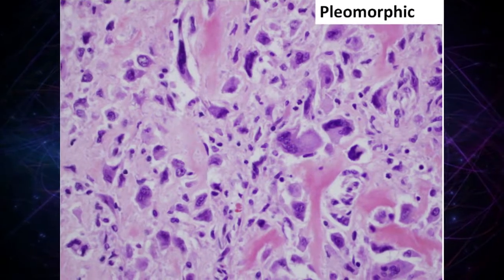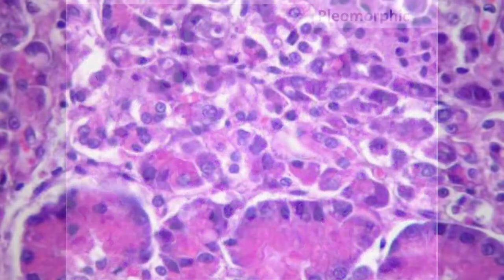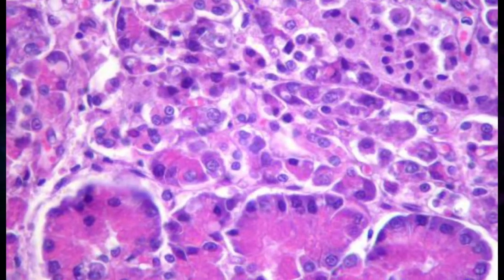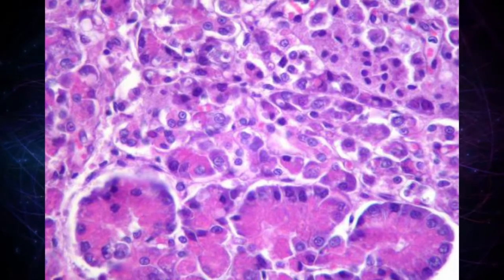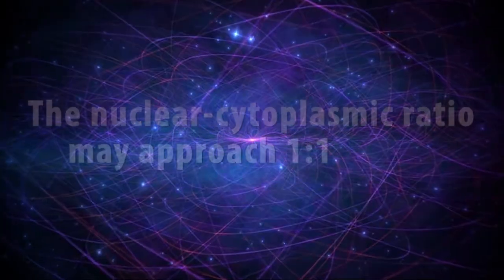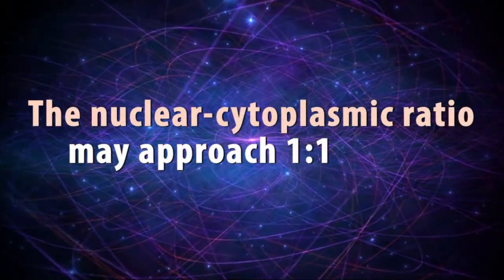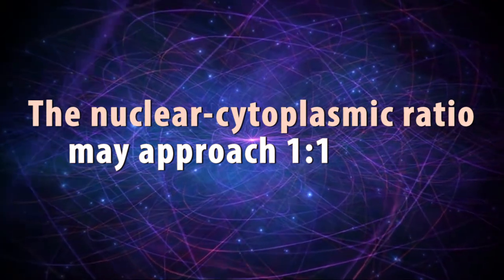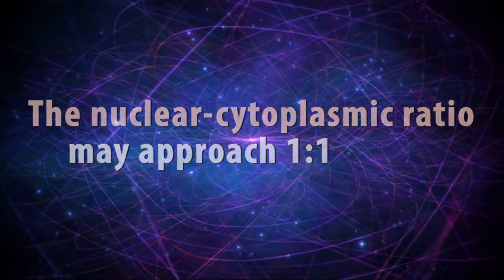Anaplastic cells vary in size and shape, and have polymorphic nuclei that also vary in size and shape. The nuclear-cytoplasmic ratio may approach 1 to 1, instead of the normal 1 to 4 or 1 to 6.